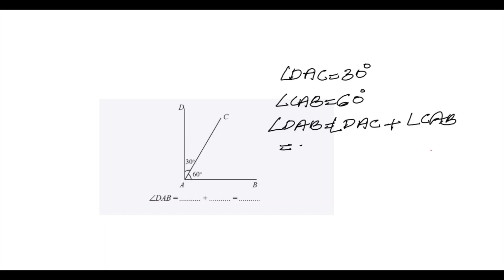What is angle DAC? It is already given in the figure, which is 30 degrees. And what is angle CAB? It is given in the figure as 60 degrees. So the sum of these two is the required angle.